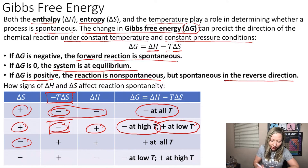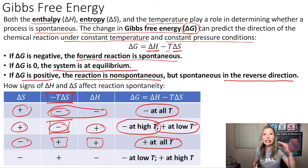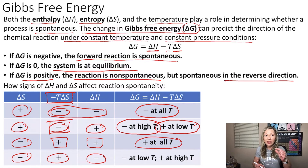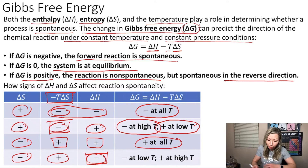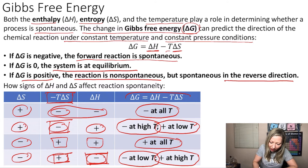If ΔS is negative, multiplying it by minus T will give us a positive value. If ΔH is also positive, then ΔG comes out as positive at all temperatures, meaning that the reaction is non-spontaneous in the forward direction. However, if ΔS is negative and ΔH is negative, it's going to depend on the temperature. When the temperature is small, ΔH is going to be relatively larger, so at low temperatures our ΔG is going to end up being negative. However, at high temperatures, ΔG is going to end up being positive because the positive part of the equation is going to be larger.